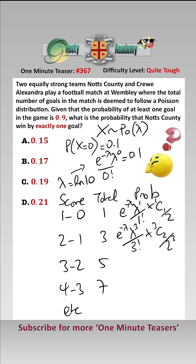For 5 goals, it's e to the minus lambda times lambda to the power of 5 over 5 factorial times 5C3 over 2 to the power of 5. For 7 goals, it's e to the minus lambda times lambda to the power of 7 over 7 factorial times 7C4 over 2 to the power of 7.